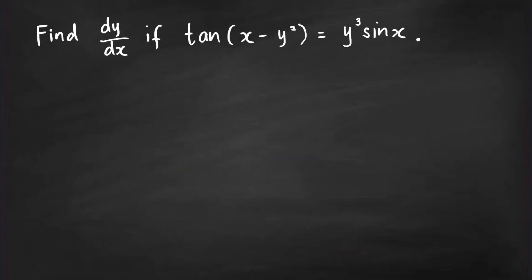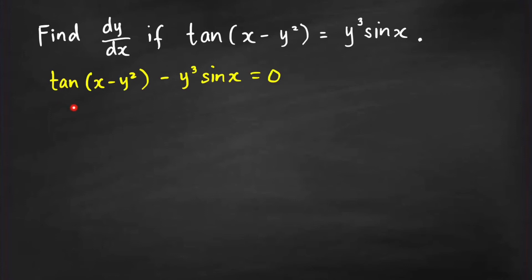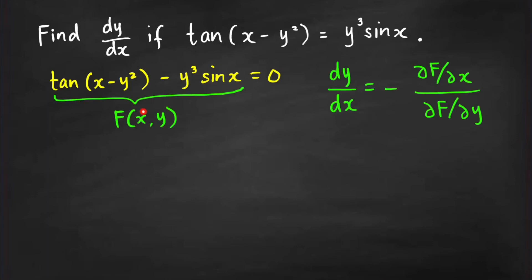Let's try another example using the fast technique. We have tan(x − y²) = y³·sin(x). We first rewrite this in the form f(x,y) = constant by moving everything to the left: tan(x − y²) − y³·sin(x) = 0. The left-hand side becomes our function f(x,y).